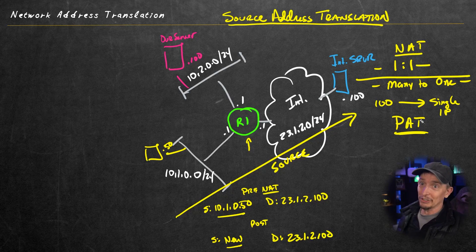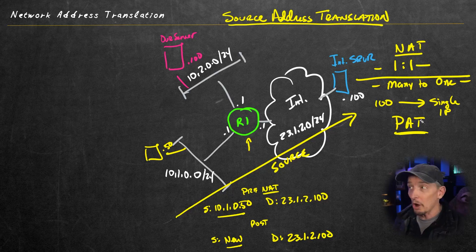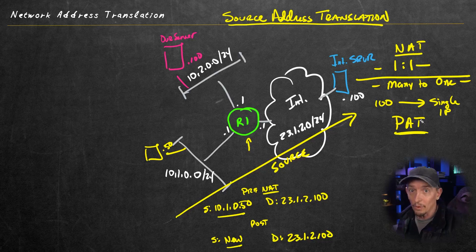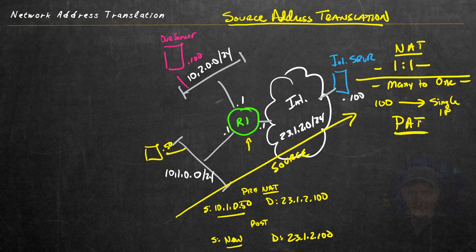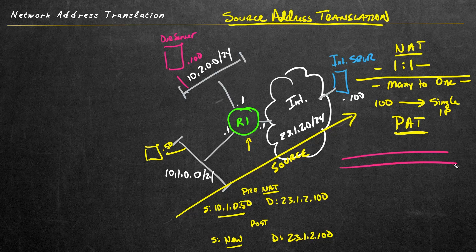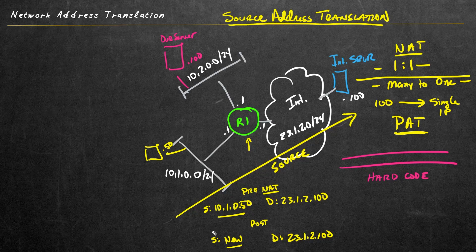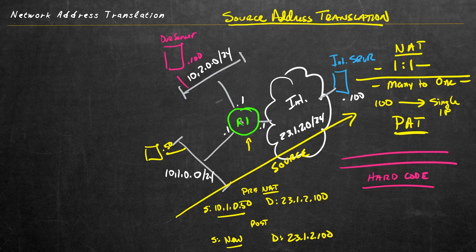One-to-one mapping is traditionally just called network address translation, while many-to-one is referred to as port address translation or PAT. Out in the wild, don't expect everybody to use the right term — somebody could say they're doing NAT when they really mean PAT, or port redirection, or some subset of address translation. We've now identified source address translation and NAT versus PAT with one-to-one or many-to-one mappings.